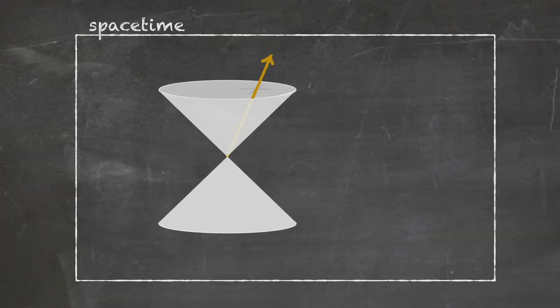If the body were to move to the right, the line would tilt a little to the right. If the body were moving to the left, it would tilt to the left. If its speed were increasing, the body would tilt more and more. And as the speed approaches the speed of light, it tilts closer and closer to the edge of the cone.